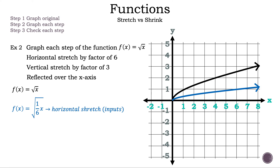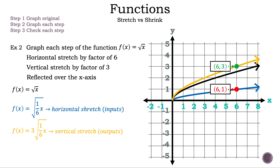Now let's move on to the next step: f(x) = 3√(1/6 · x). Is the graph going to push up vertically or push down vertically? Remember, the 3 affects the output and the results will happen faster, so the graph is going to push up vertically or stretch vertically. Let's check the points (6, 1) and (6, 3). Dividing the outputs, 3 by 1, the result is 3 — the same number outside the square root. So the output happens faster.